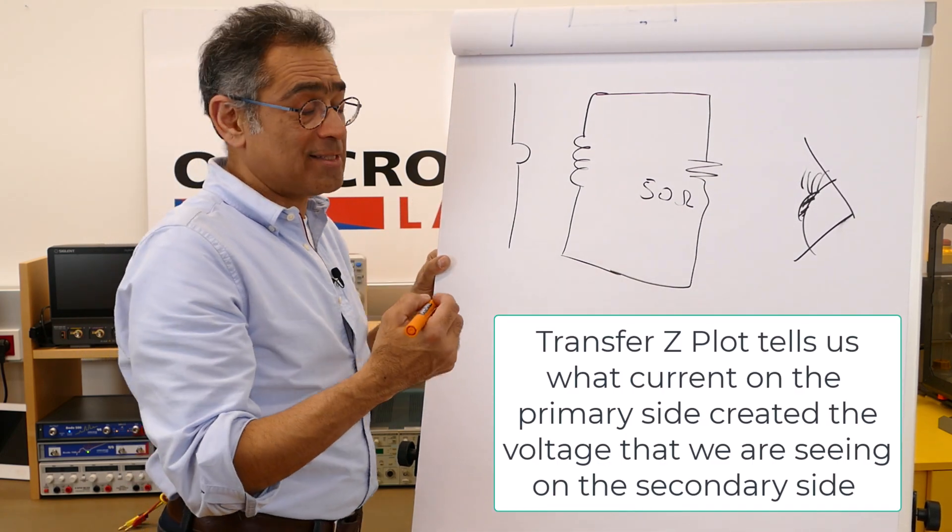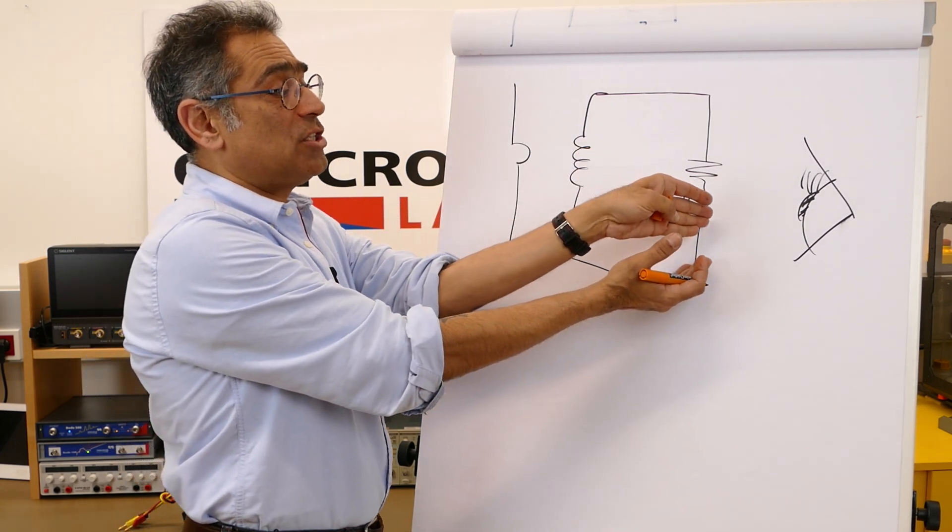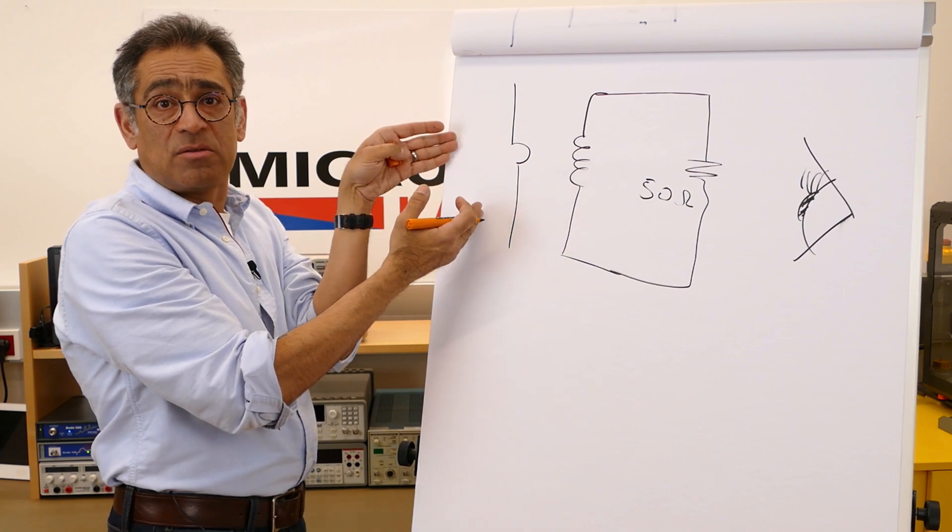It makes sense for it to be an impedance plot because you're taking a voltage and you're converting it into a current.